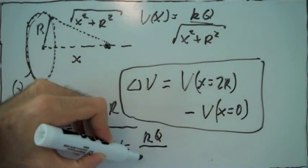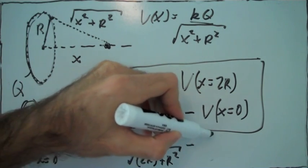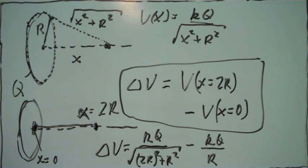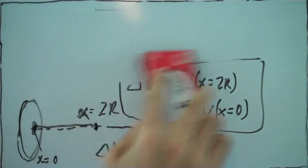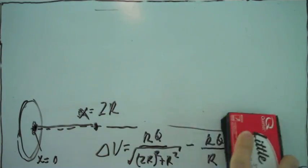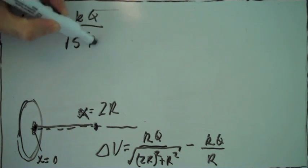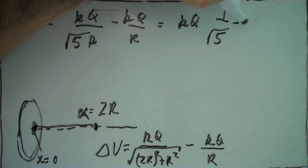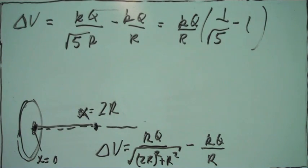The potential at x equals 2r is this, the potential at x equals 0 is this, and their difference is just the potential difference between those two points. So we just do this subtraction and we get this potential difference is equal to kq, we have this subtraction, we can bring the kq out, factor it out, and that's the potential difference.